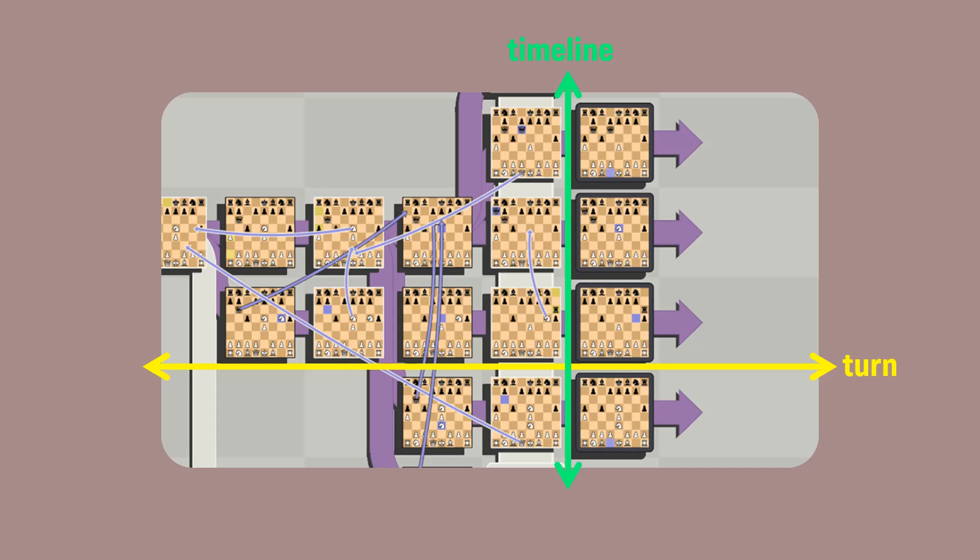The turn dimension advances after both white and black play. This means that two boards is actually only one turn. A new timeline is added when a chess piece moves into either the past or the present. A new timeline is not added when a piece moves into the future.